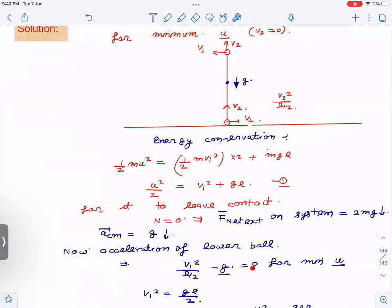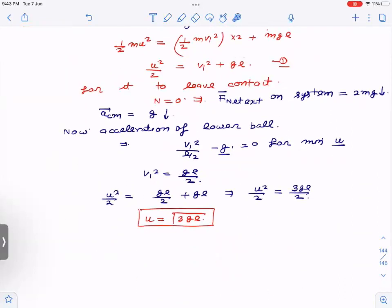Again, that acceleration also have equated to zero because this would leave contact for minimum. We are calculating for minimum U. So if I put this also as zero for minimum U, then you get V1 squared as gL by 2. Now this V1 squared, if I substitute here, then you get U as root 3gL.